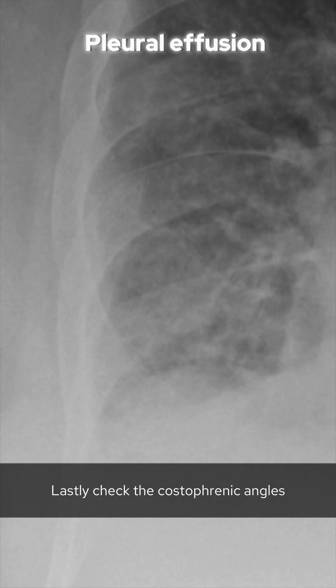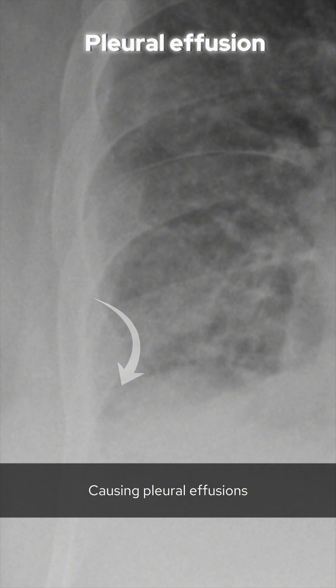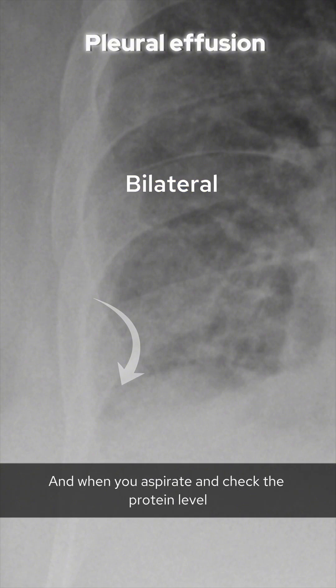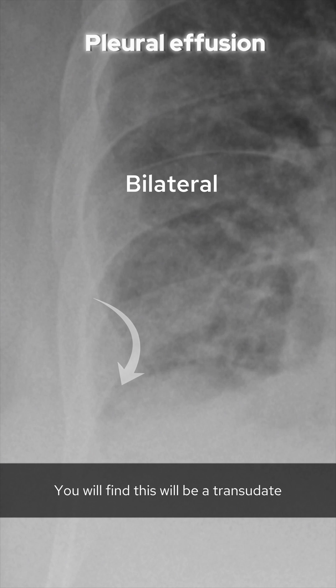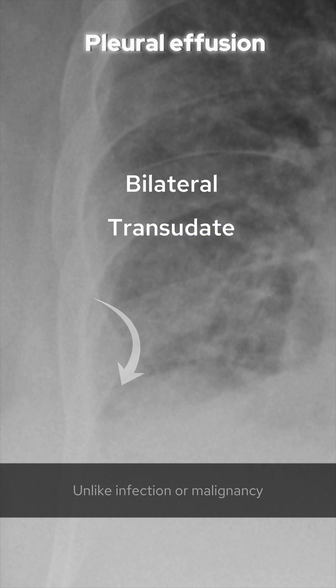Lastly, check the costophrenic angles, as fluid leaks into the pleural spaces causing pleural effusions. This is usually bilateral, and when you aspirate and check the protein level, you will find this will be a transudate, unlike infection or malignancy, which will usually cause a pleural exudate.